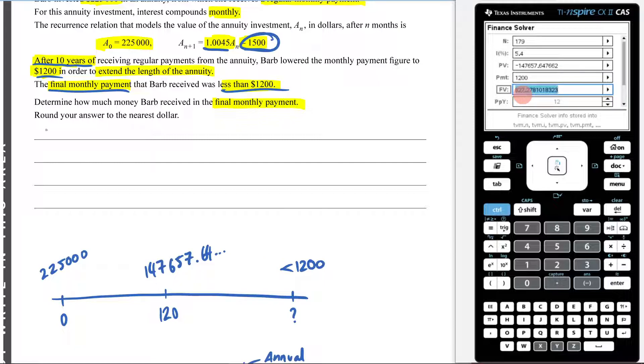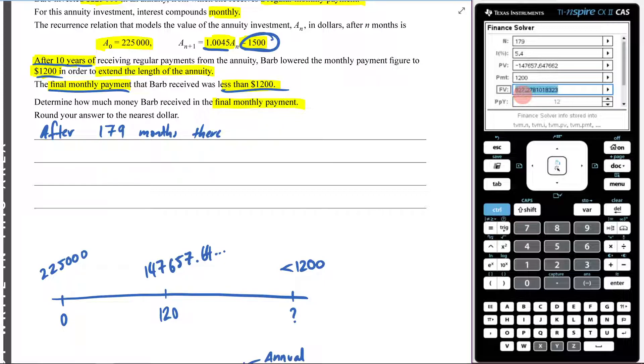So I'm just going to write this as a sentence. This isn't my final answer, but after 179 months, there is how much money? There is $827.278... in annuity.